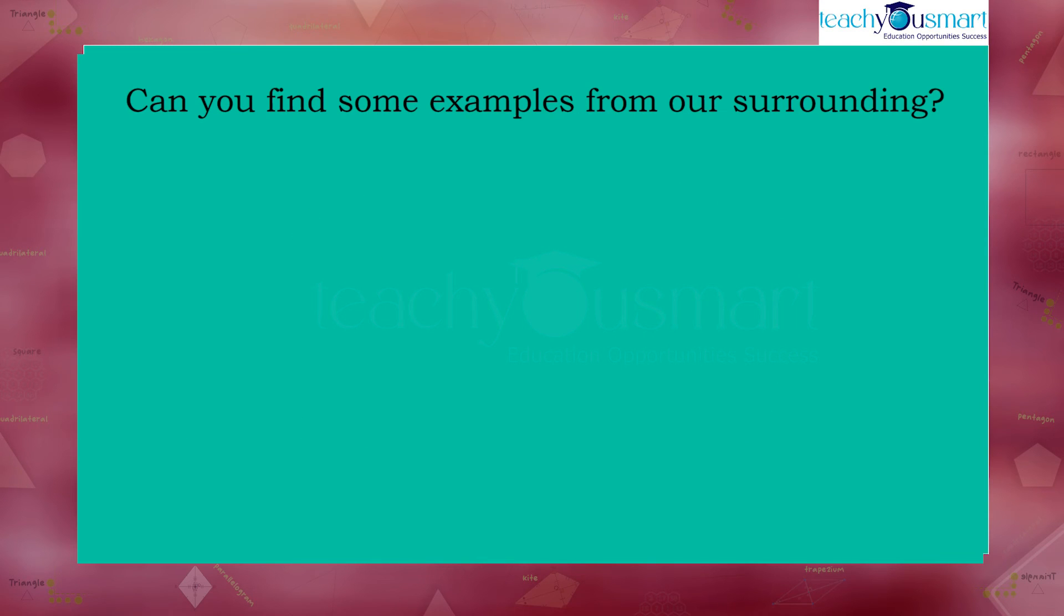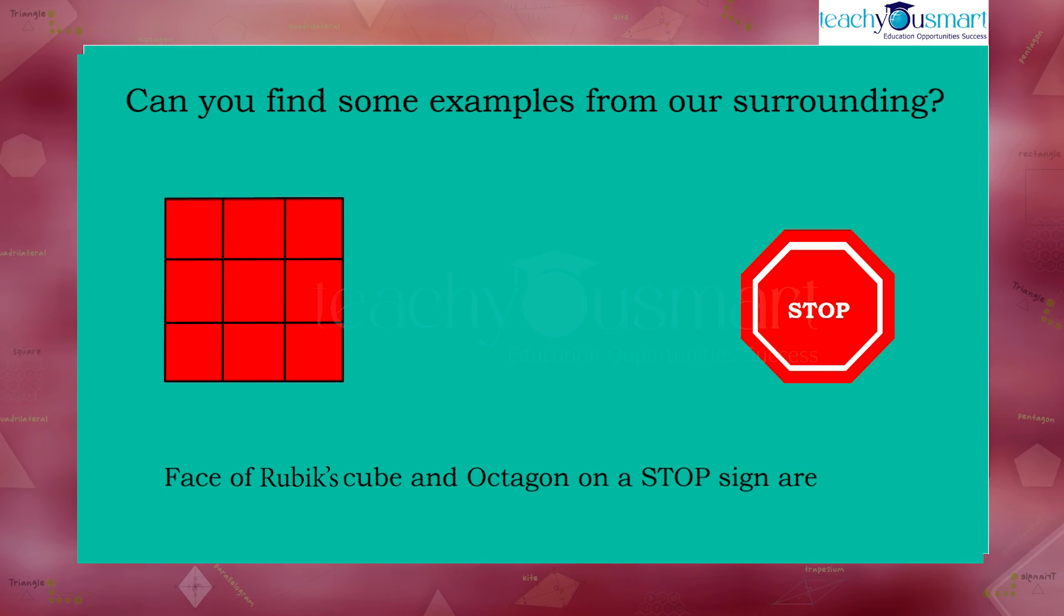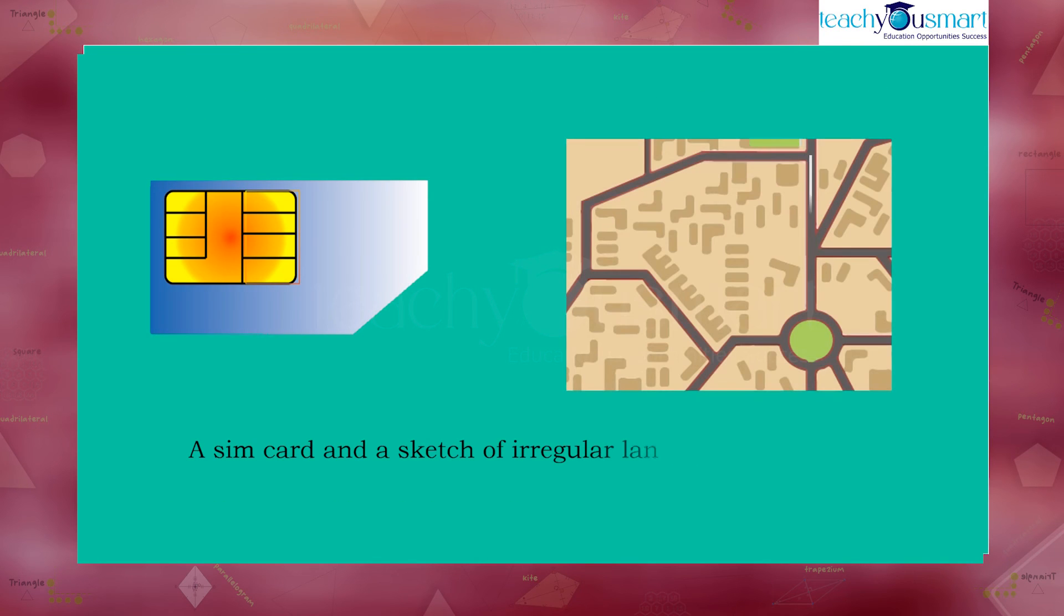Can you find some examples from the surroundings? The face of a Rubik's cube and octagon on a stop sign are examples of regular polygons. A SIM card and a sketch of an irregular land are examples of irregular polygons.